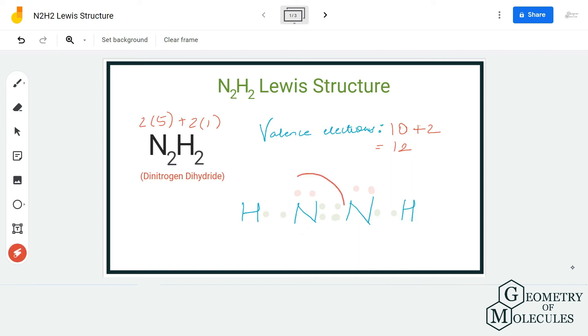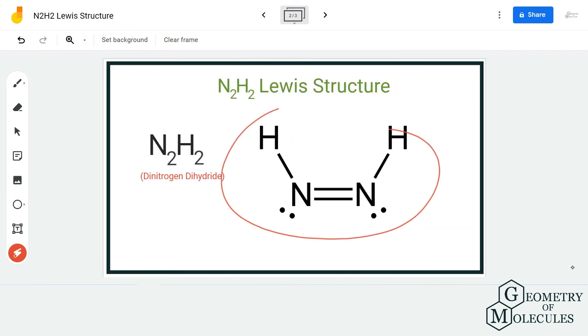Doing that, we will have eight valence electrons for both these nitrogen atoms and hence this is the accepted Lewis structure for N2H2 as all the atoms have complete octets and have a stable structure. I hope this video helps you to understand the Lewis structure of N2H2.